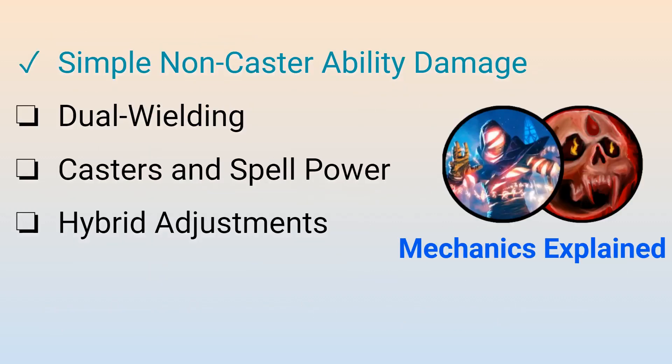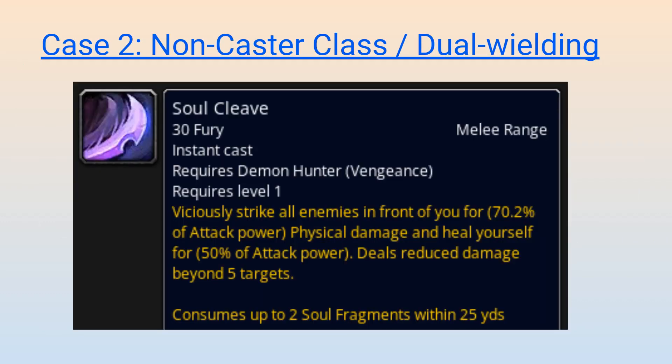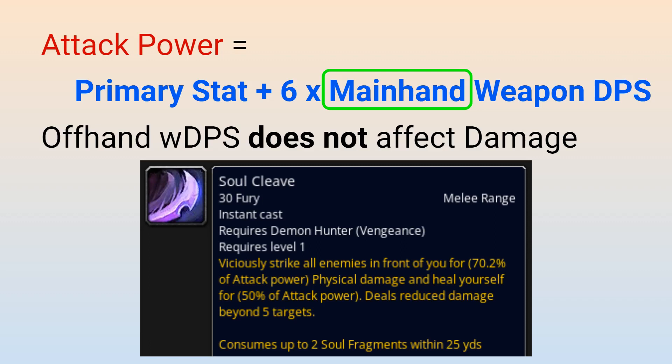With the first case out of the way, we are now going to look at the differences associated with dual wielding. For the second case, we are going to talk about non-caster classes on specializations that can only dual wield, so they don't even have the option of using a two-handed weapon — for example, Demon Hunters. If you start to take a look through their abilities, you will notice that most of the tooltips look similar to what we would see on Blood Death Knights, where damage values are represented by a simple attack power coefficient. You can see that in the tooltip for Soul Cleave, which provides an attack power coefficient of 70.2% for damage and an attack power coefficient of 50% for healing. For these types of abilities, the attack power calculation remains exactly the same as what you saw before in the Blood Death Knight example. Specifically, only your main hand weapon DPS is considered when calculating total attack power, while your off-hand weapon DPS does not matter at all for this ability, despite the fact that you have one equipped.